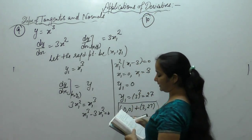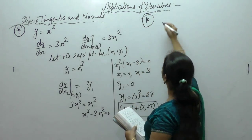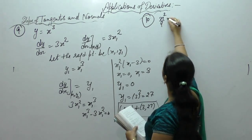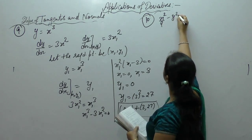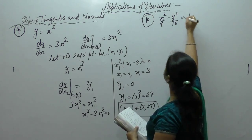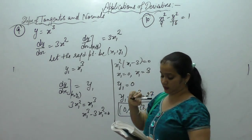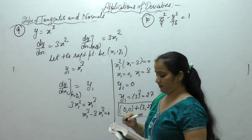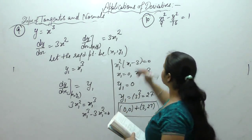Find the point on the curve x²/9 - y²/16 = 1 at which the tangent is parallel to the x-axis or y-axis.